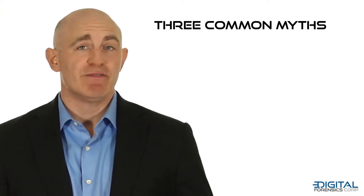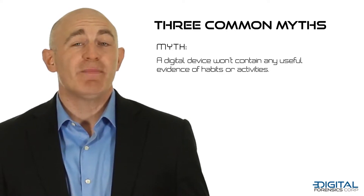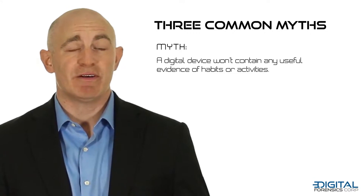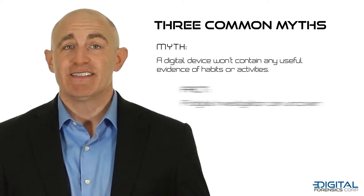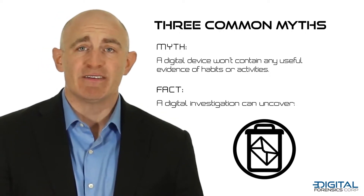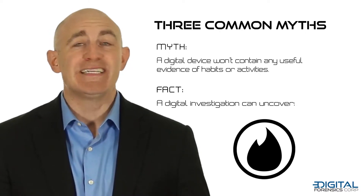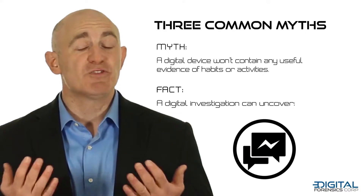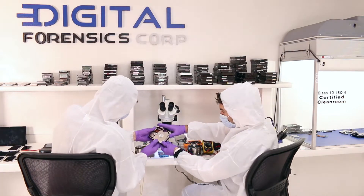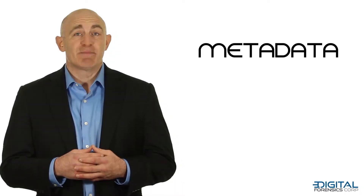Three: your client may not believe that a mobile device or hard drive will contain useful evidence, or they may not be aware that the best way to understand the habits or activities of a person is by examining their personal devices. The fact is, a digital investigation can uncover emails, deleted emails, text messages, deleted text messages, third-party applications such as Viber, Snapchat, Tinder, deleted call logs, deleted pictures, MMS messages, and so much more. Not only can we uncover the content of these communications, but also the extremely valuable metadata. Metadata provides the who, what, when, and where of digital information. For example, take a cell phone photo: the data is the photo itself, and the metadata is the information automatically recorded by the phone that describes when the picture was taken and even GPS coordinates of where the picture was taken.